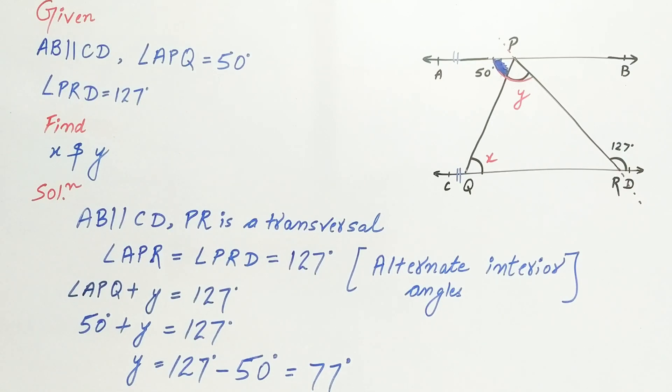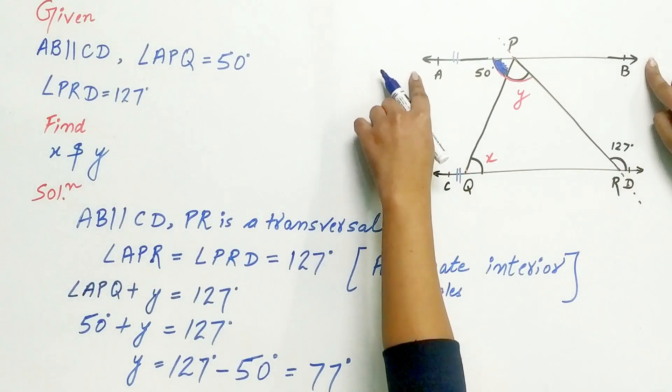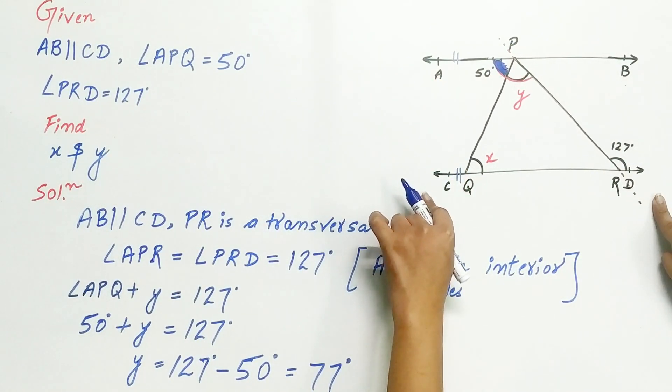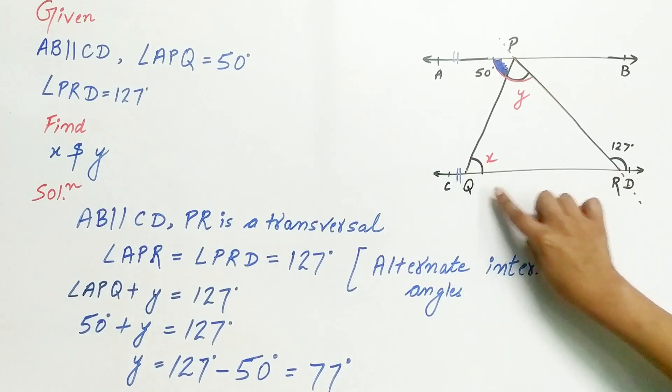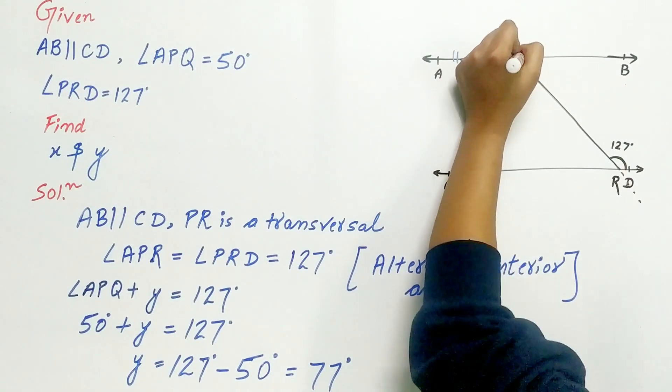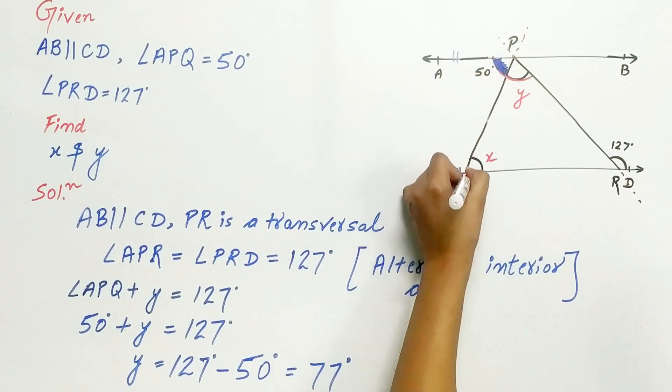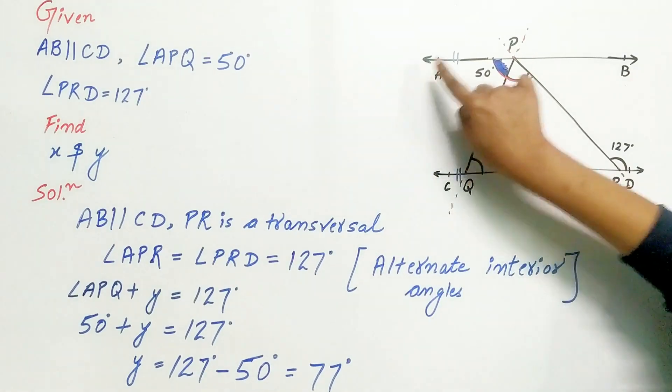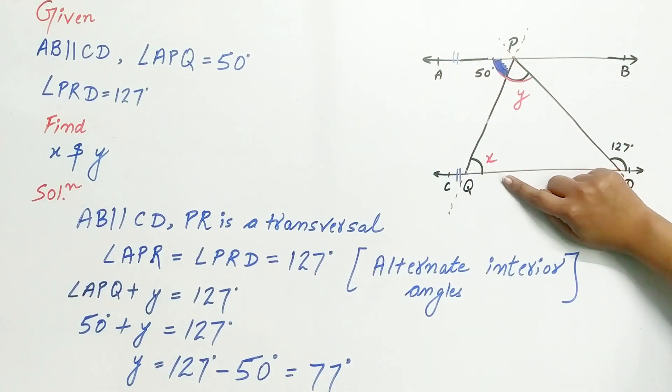which equals 77 degrees. Now let's find out x. We already know AB is parallel to CD. Now, PQ and PR both are transversals because they both intersect the parallel lines. Hence, angle APQ is equal to x because of alternate interior angles.